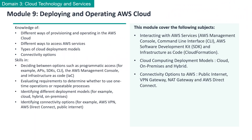Welcome to Module 9: Deploying and Operating AWS Cloud. In this module, we will cover different ways to provision and operate in the AWS Cloud through AWS Management Console, Command Line Interface or CLI, AWS Software Development Kit or SDK, and Infrastructure as Code or IaC through AWS CloudFormation.